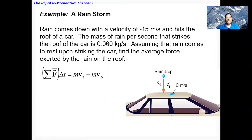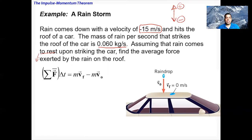Let's apply the impulse-momentum theorem to an example: a rainstorm. Rain comes down with a velocity of negative 15 meters per second (negative means downward). The mass of rain per second striking the roof of a car is 0.060 kg/s. Assuming the rain comes to rest upon striking the car (vf = 0), find the average force exerted by the rain on the roof.